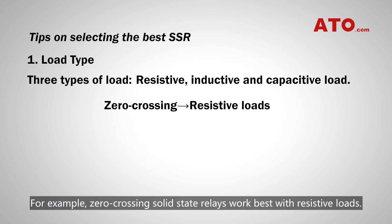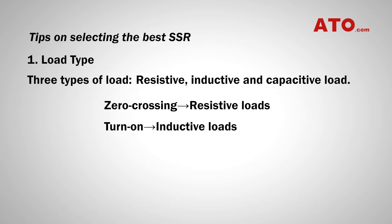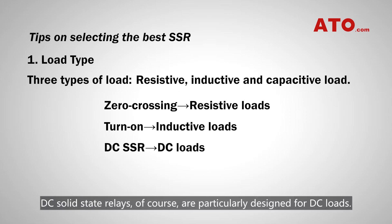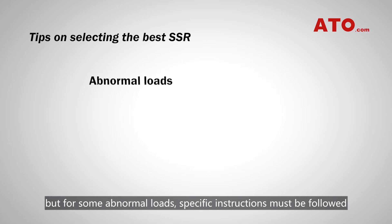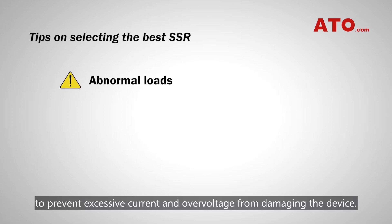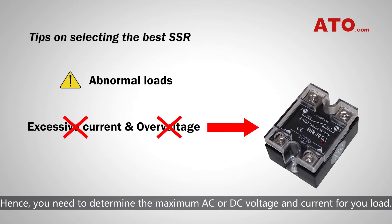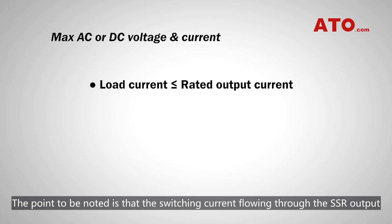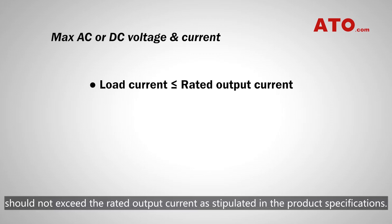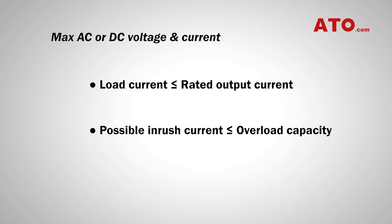For example, zero-crossing solid-state relays work best with resistive loads. Random turn-on solid-state relays are ideal for inductive loads. DC solid-state relays are particularly designed for DC loads. SSRs can switch normal loads on and off, but for some abnormal loads, specific instructions must be followed to prevent excessive current and overvoltage from damaging the device. Hence, you need to determine the maximum AC or DC voltage and current for your load. The switching current flowing through the SSR output should not exceed the rated output current as stipulated in the product specifications, and the possible in-rush current must not exceed the overload capacity of the relay.